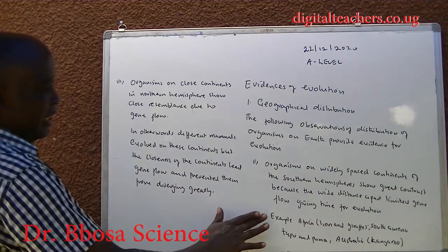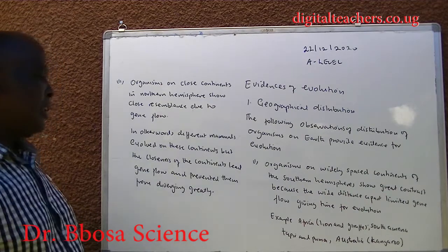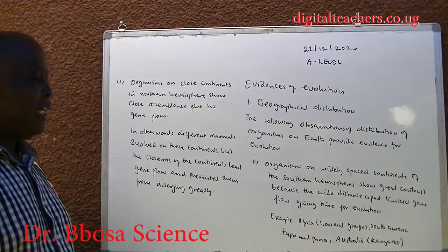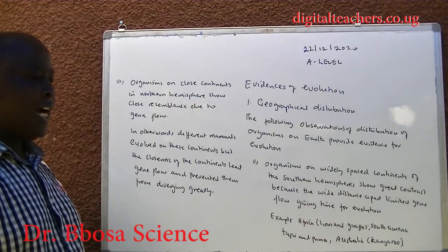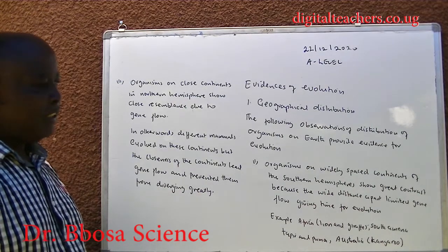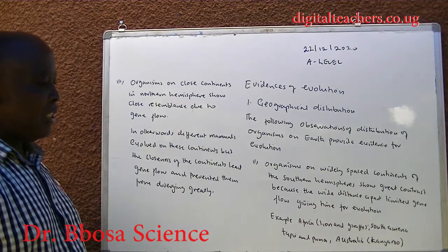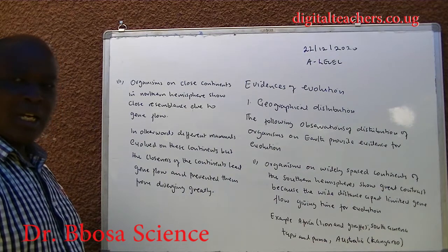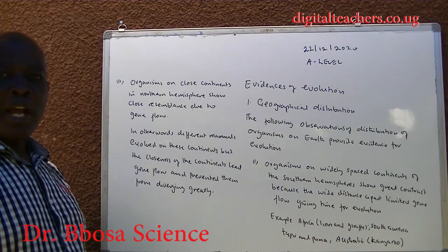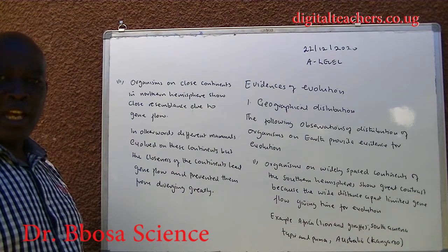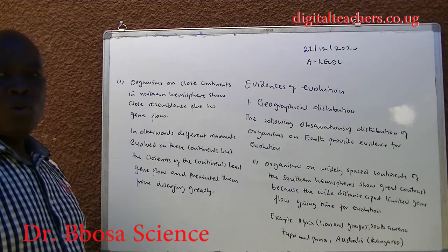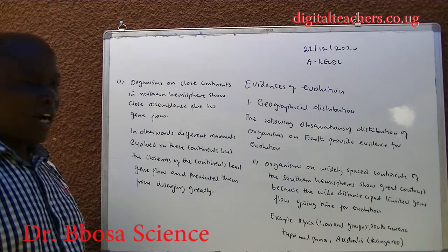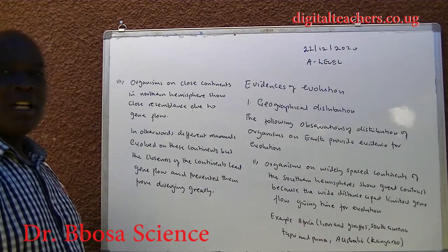For example, in Africa we have unique lions and giraffes. In South America we have tapir and puma. While in Australia we have kangaroos, which are not found on any other continents.